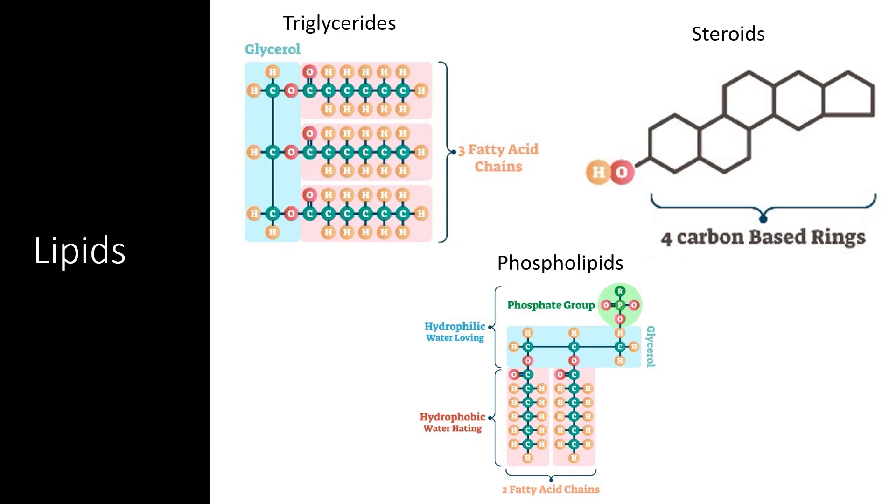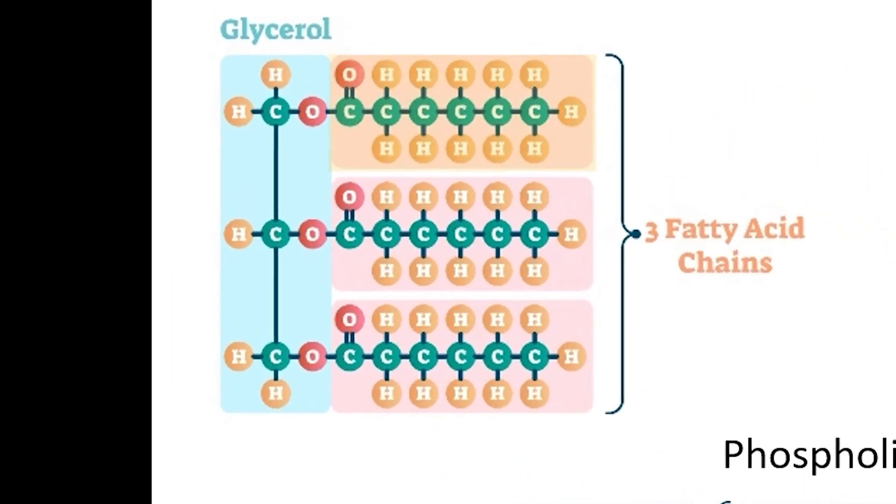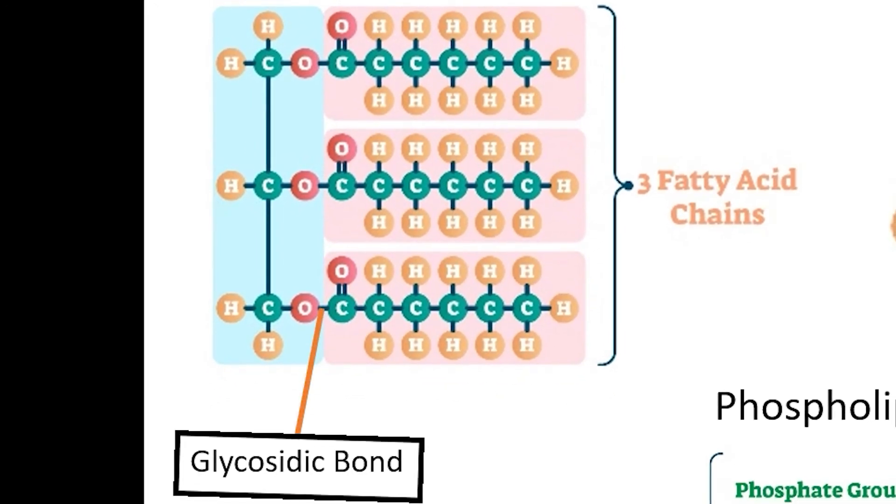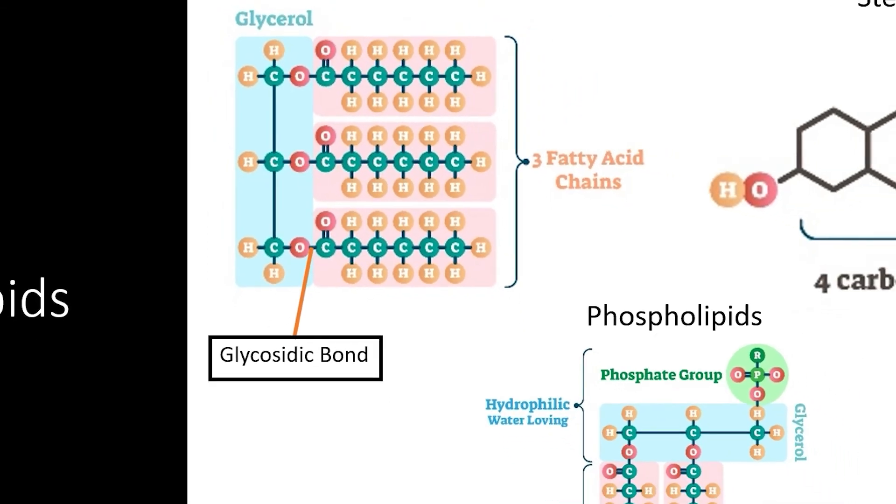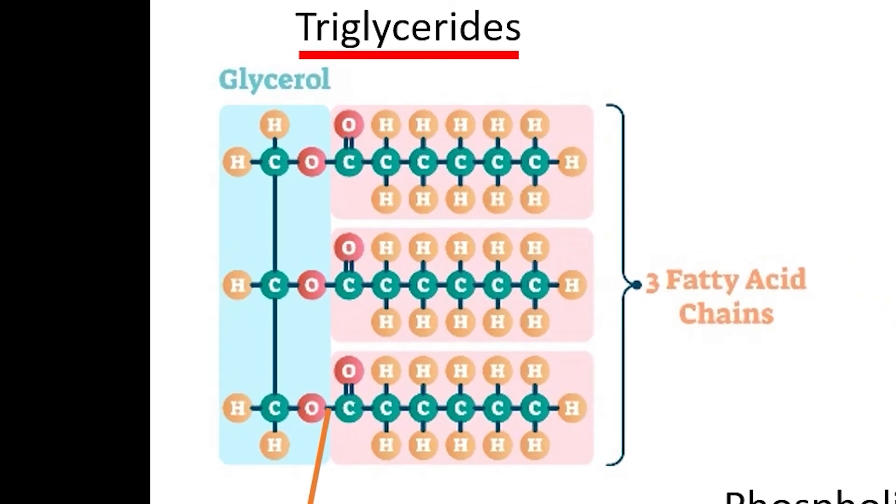Lipids are built out of monomers of fatty acids. Fatty acids are simply hydrocarbon chains that are typically connected together via glycosidic bonds to a polar molecule. There are three important types of lipids to consider. Triglycerides are units of three fatty acid chains bonded together with a glycerol molecule. Triglycerides are used to store massive amounts of energy in a relatively small space.